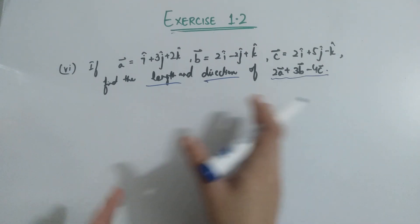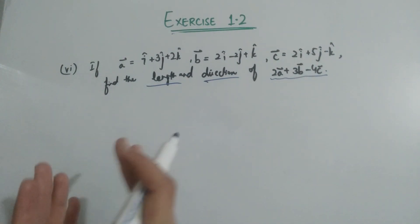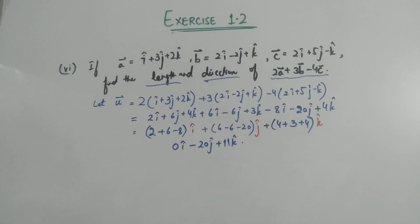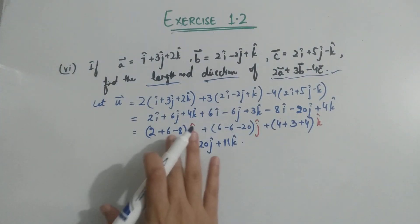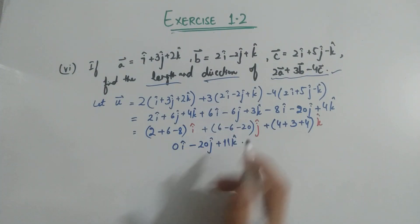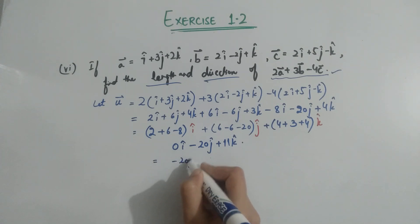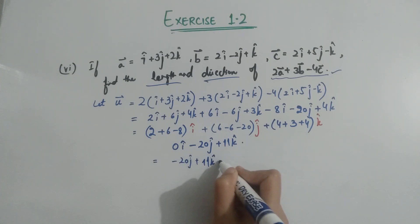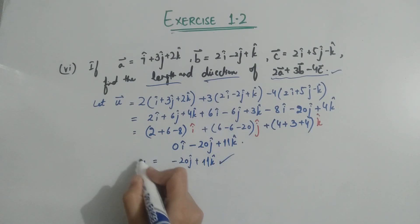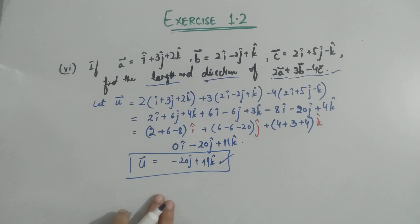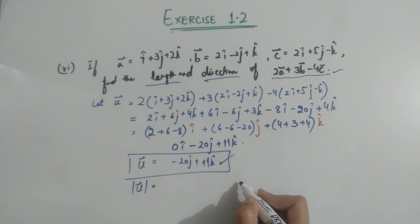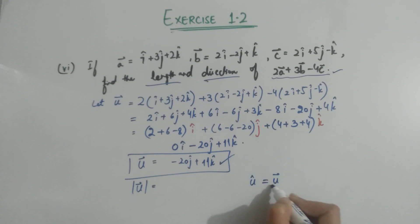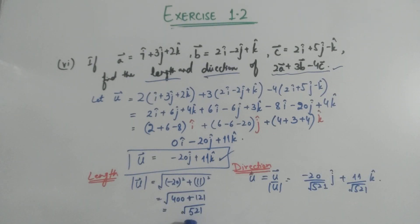After simplifying the expression, the resultant comes out to minus 20j plus 11k. To find direction, find the unit vector, which equals the vector over its magnitude. Putting in the values gives the final answer — this is the magnitude and this is the direction.